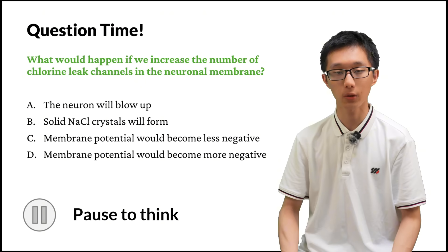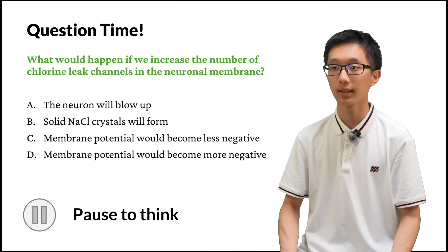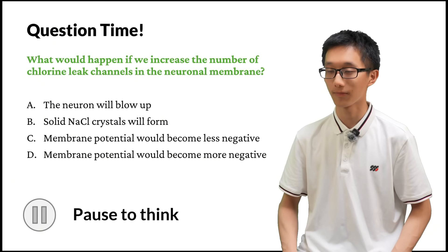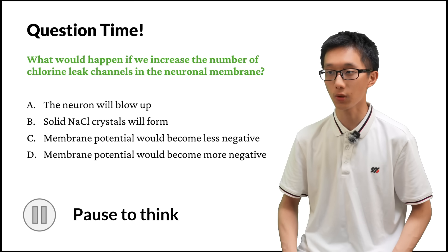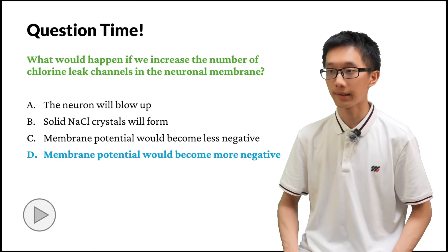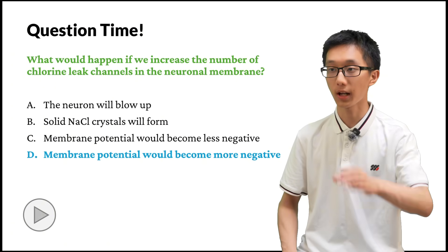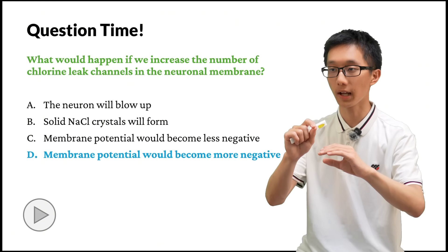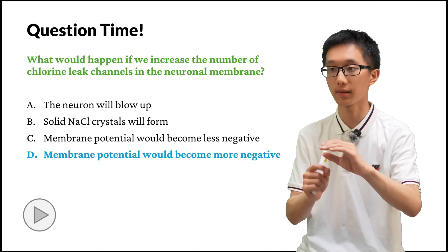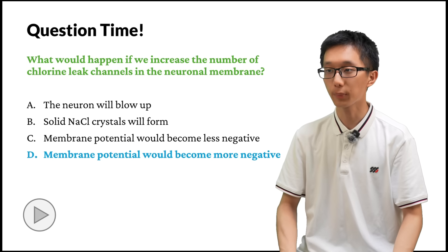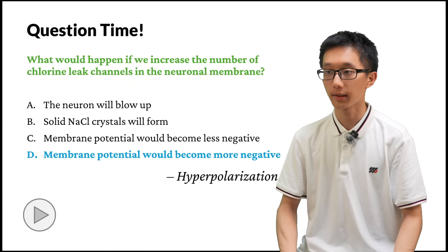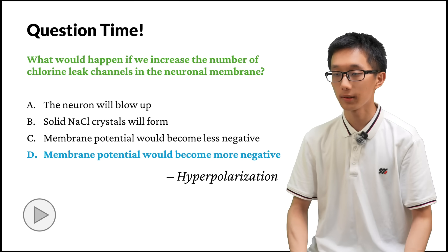Second question: what would happen if we increase the number of chlorine leak channels in the neuronal membrane? a) The neuron will blow up. b) Solid sodium chloride crystals form inside the cell. c) Membrane potential becomes less negative. d) Membrane potential becomes more negative. The answer is d — membrane potential would become more negative, because there is a higher concentration of chlorine outside than inside, so chlorine ions flow into the cell, adding more negative charge inside. This process is called hyperpolarization — the membrane becomes more polarized because the potential becomes more negative.